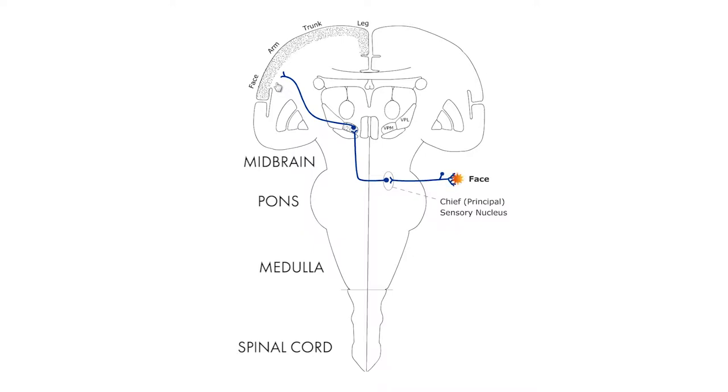And synapses on the third neuron in the thalamus in the same nucleus but different cells, the ventral posterior, and this time it's the medial part of the thalamus, and then on through the internal capsule up to the cortex.